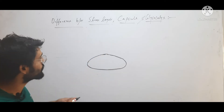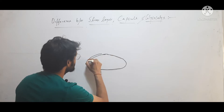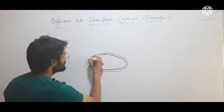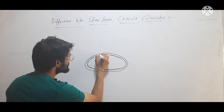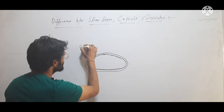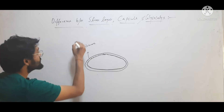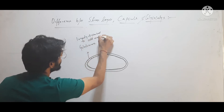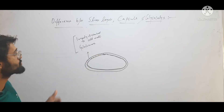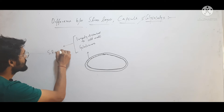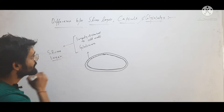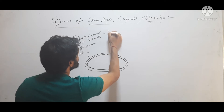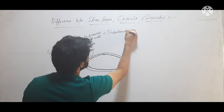Outside this cell wall, another layer is there, and this layer may be gelatinous and loosely attached to the cell wall. If this layer is gelatinous and loosely attached to the cell wall, then it will be called slime layer. It will be made up of polysaccharides and water.